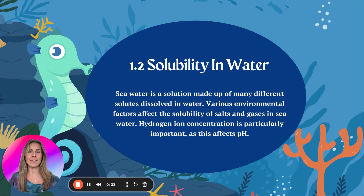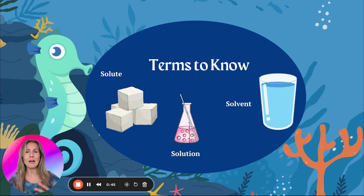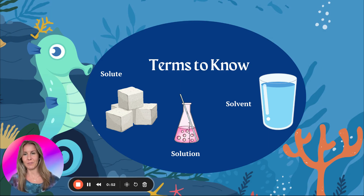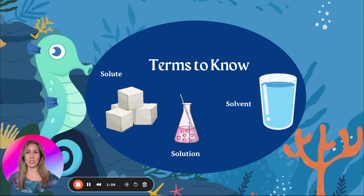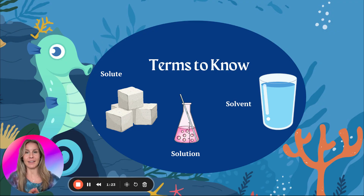We're going to talk about how things break down or dissolve in water. Seawater is a solution made up of many different solutes dissolved in water. We need to know solute and solvent. A solute is anything that can dissolve in water — for our example, that's salt. The solvent is water, because seawater is made of salt and water. A solution is what is made when the solute and solvent mix together, like the final product in a math problem. Solute plus solvent makes a solution.